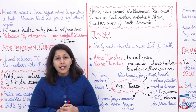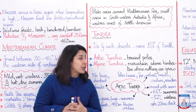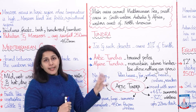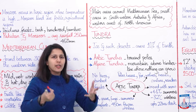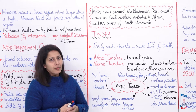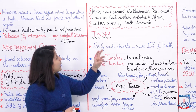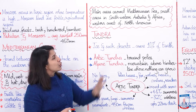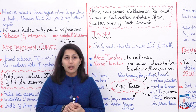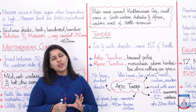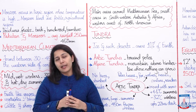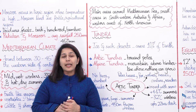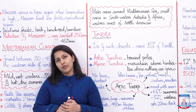Sheep aur cattle ki skin aur wool economically kaam aati hai — bags, clothes, aur carpets banane mein. The areas where Mediterranean climate is found: main areas around the Mediterranean Sea, small areas in southwestern Australia, Africa, and the western coast of North America. Moving on — we have tundra. Tundra refers to the coldest temperatures — ice and rock deserts — and they cover almost 10 percent of the Earth.